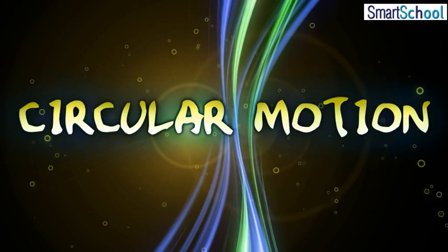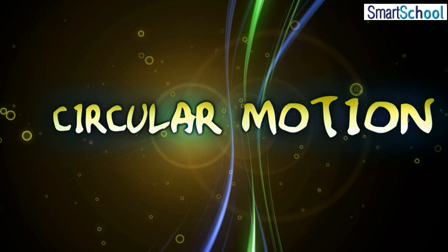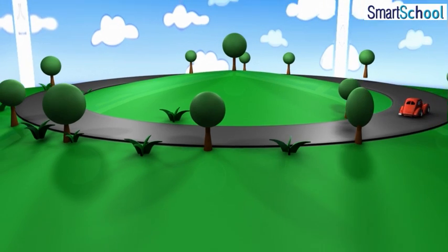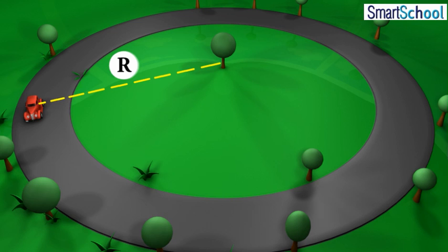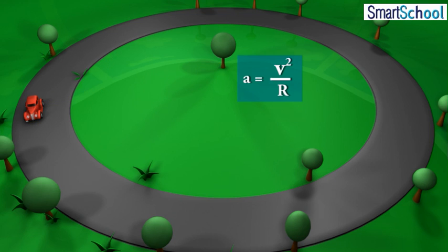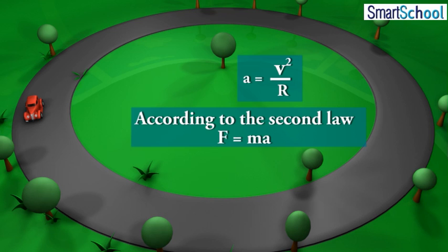Circular motion: acceleration of a body moving in a circle of radius R with uniform speed V is V square upon R, directed towards the center. According to the second law, the force F providing this acceleration is F equals